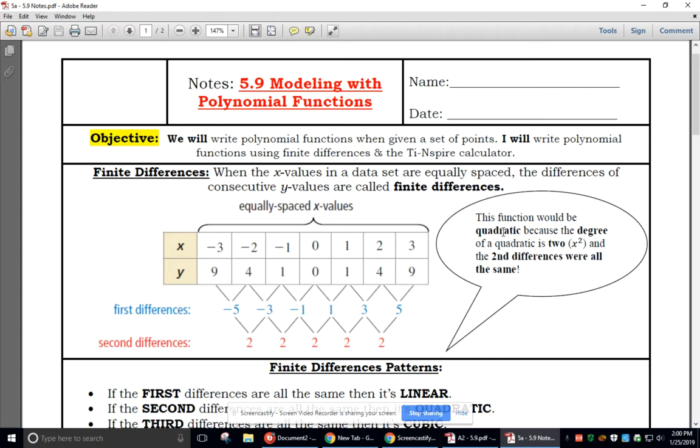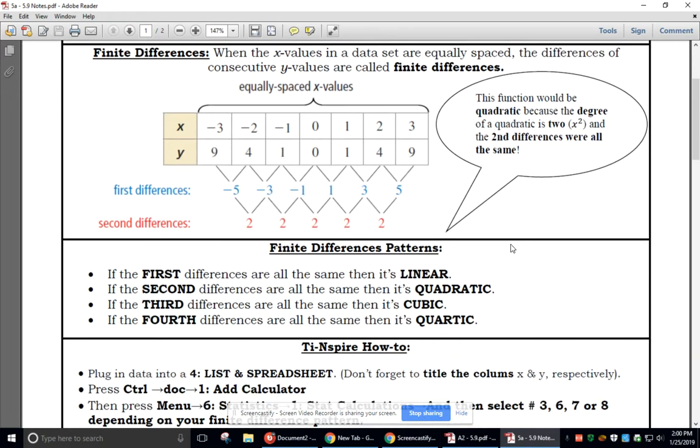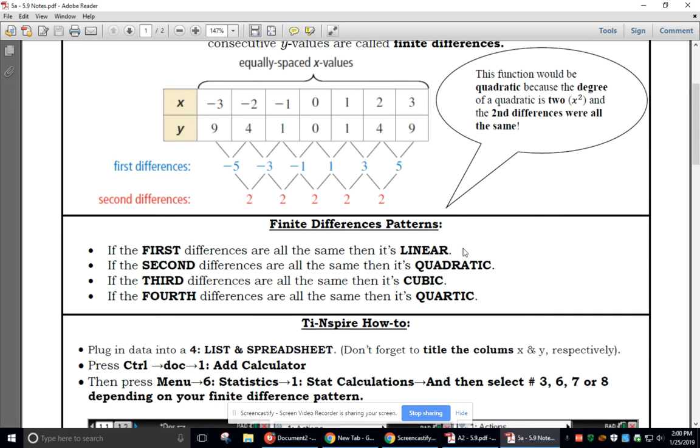So because the second differences are all the same, that tells me the degree of the function is going to be 2, which means it's going to be a quadratic function. I wrote basically the patterns, and it kind of makes sense. First difference is linear, because that's a 1-degree polynomial function. 2-degree polynomial function, second difference quadratic. 3-degree, third difference cubic. 4-degree, fourth difference quartic.